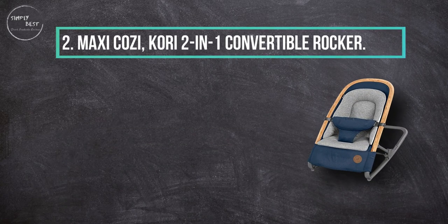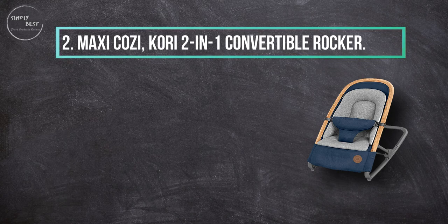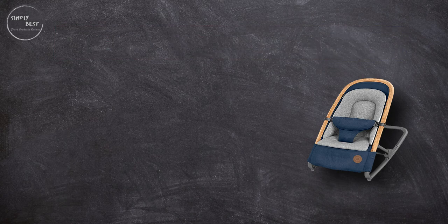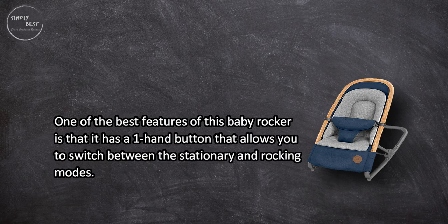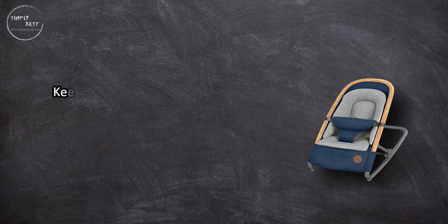At number two, Maxi Cozy Corey two-in-one convertible rocker. One of the best features of this baby rocker is that it has a one hand button that allows you to switch between the stationary and rocking modes.